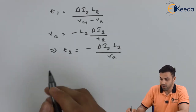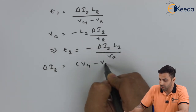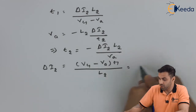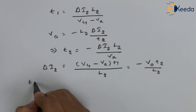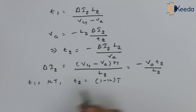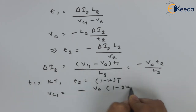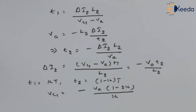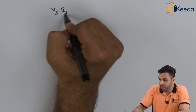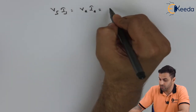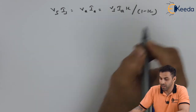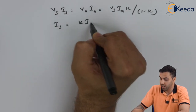Therefore, Δi2 = (VC1 − Va)·T1/L2 = −Va·T2/L2. Substituting T1 = kT and T2 = (1−k)T, we get VC1 = −Va·(1 − 2k) / k, which is the average voltage across capacitor C1. Ignoring switching losses: VS·IS = Va·Ia = VS·Ia·k/(1−k), hence IS = k·Ia / (1−k).